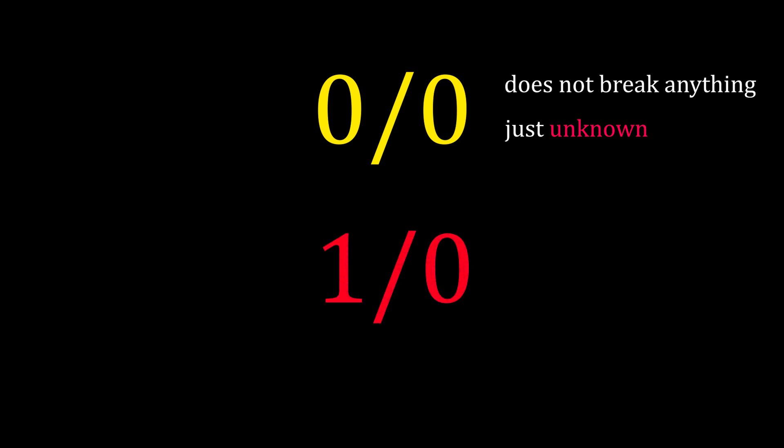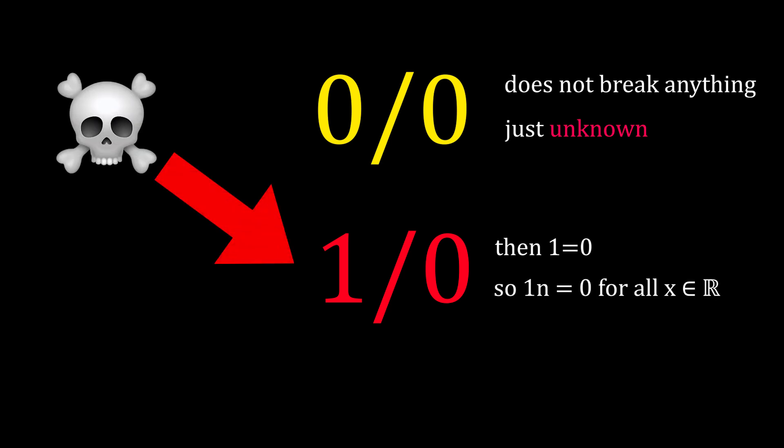But if 1 divided by 0 were a real thing, it would break math by making 1 equal to 0. Then we could multiply any number with 1 to make any number equal to 0. So 1 divided by 0 has to be more dangerous.